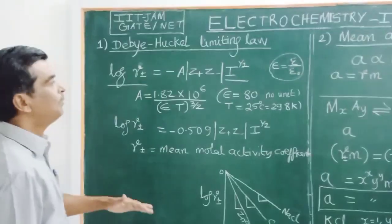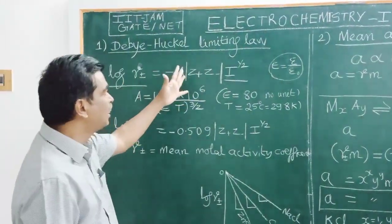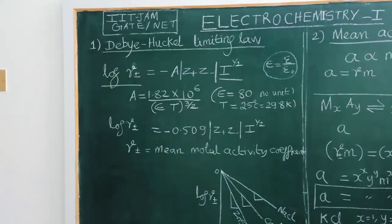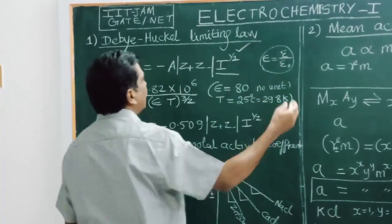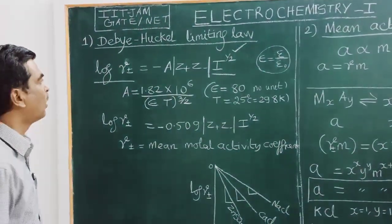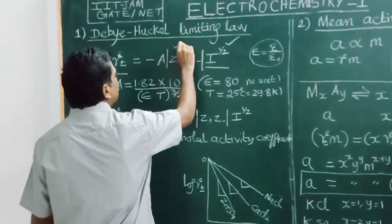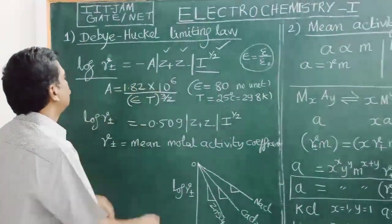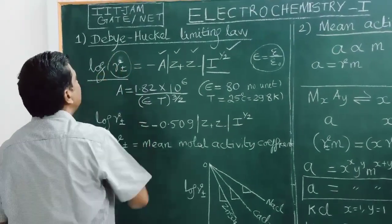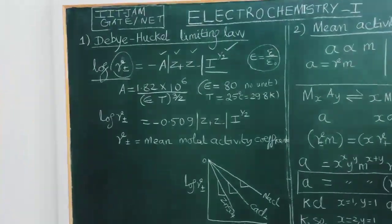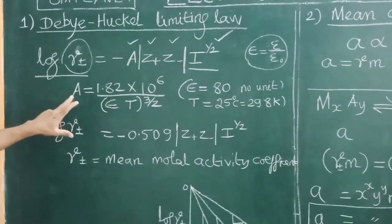Ionic strength was discussed in the last video. Ionic strength can be calculated for a given electrolytic solution. If we know the ionic strength, the formula, and the charges on the cation and anion — both of which are known — and A is a constant, therefore we can calculate the mean activity coefficient gamma±.